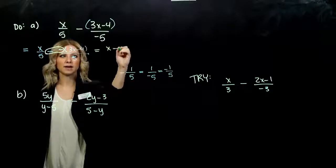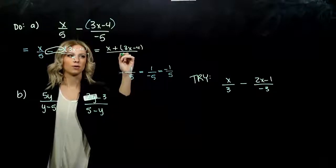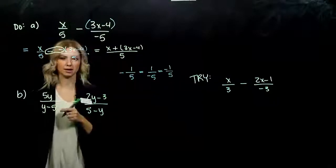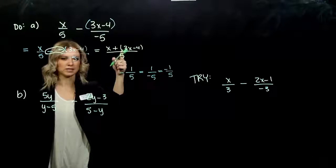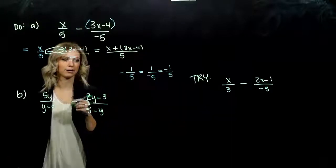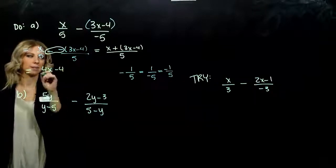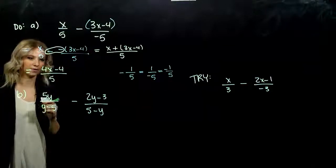Now I've got x plus 3x minus 4 over 5. We have that common denominator. And do those parentheses matter now that it turned into a positive? No. We can combine our like terms. So I've got 4 factors of x minus 4, all over 5.